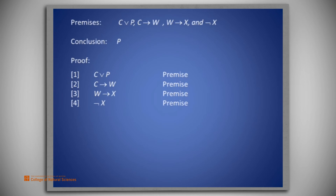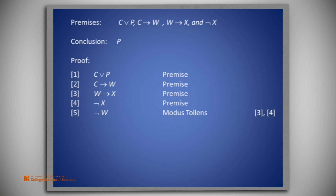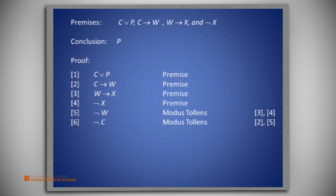From lines 3 and 4, we see, using modus tollens, that W must be false. Then, from lines 2 and 5, again using modus tollens, we see C must be false.